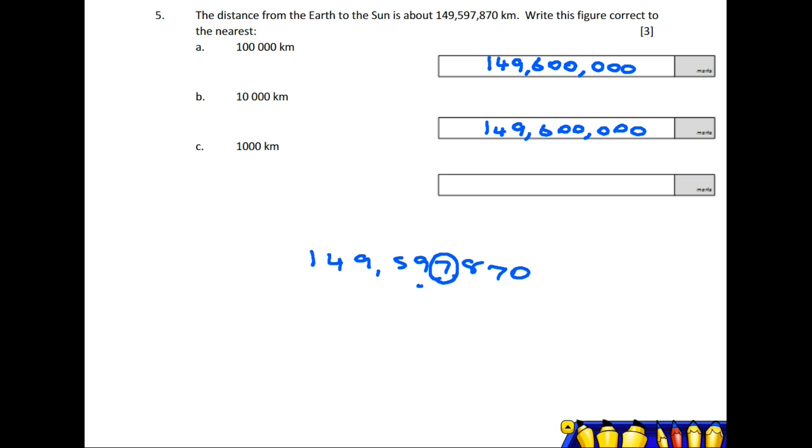For part C, we're rounding to 1,000 kilometers. The fourth column is the seven. The next number is eight, which is five or above, so it rounds up. The answer becomes 149,598,000.